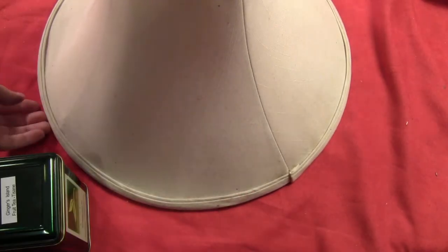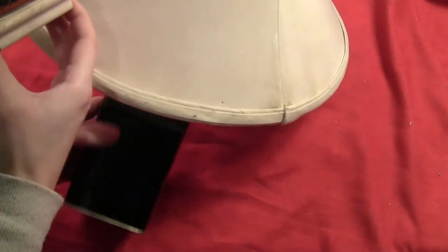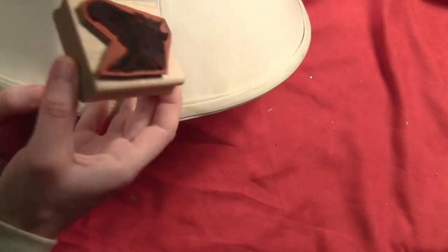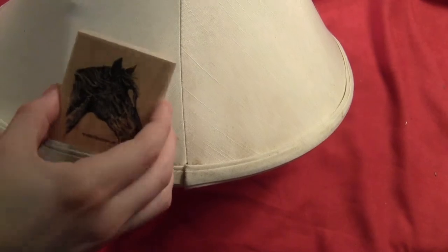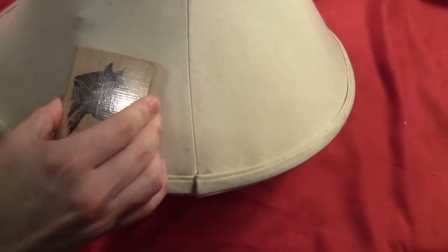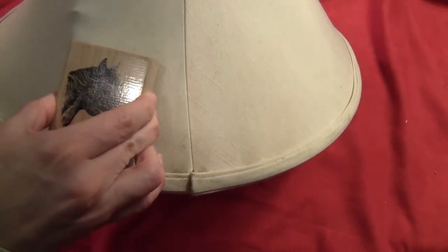So ink up your stamp. I find the chalk ink really works well on fabric, which is another reason I used it. Then you want to take something hard. I'm using a tea tin here. You just want to stamp your stamp right across where the hard surface is.